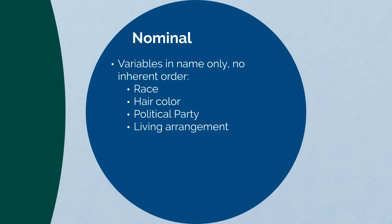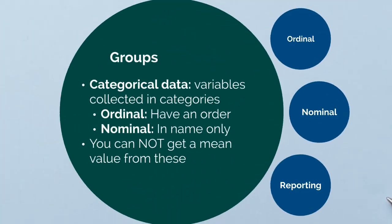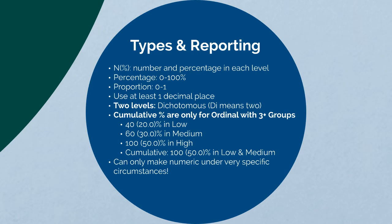You cannot capture a mean for these variables. When reporting categorical variables, it is an N and a percent — a number and a percentage in each level. Remember, a percentage goes from 0 to 100 and a proportion goes from 0 to 1. Always use at least one decimal place, but do not round up because you could end up with a total that goes over 100.